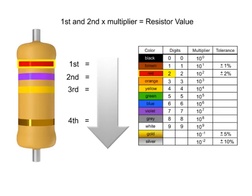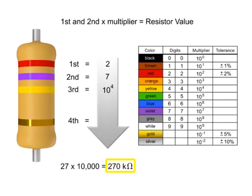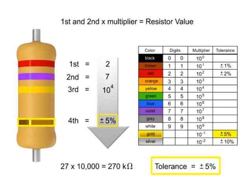The first band is red, so the first digit value is 2. The second band is violet, so digit 2 is 7. The third band is yellow, so we multiply the first two numbers by 10 to the fourth, or 10,000. Thus, the value of this resistor is 270 kilo-ohms with a tolerance of plus or minus 5%.